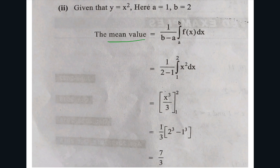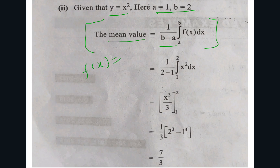This problem is based on mean value. The formula for mean value is: 1/(b−a) times the integral from a to b of f(x) dx. Here y is given as x², with a and b also given. So f(x) equals y equals x². In place of f(x) we substitute x², in place of a we substitute 1, and in place of b we substitute 2. So b minus a is 2 minus 1, which equals 1.